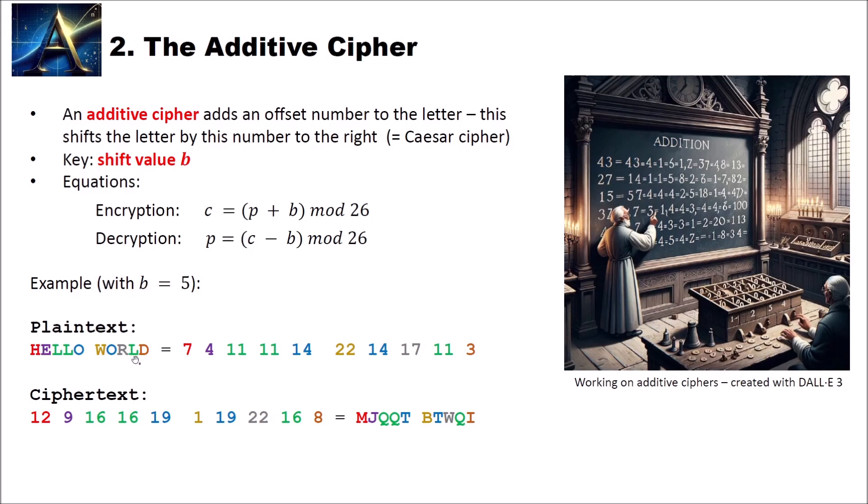Here is an example with our shift value b equal to 5. Our plaintext is Hello World. Hello World is converted to numbers here 7, 4, 11, 11 and so on. And to compute our ciphertext here we take for instance our first plaintext letter, we add 5 and we get 12. Then when we have our ciphertext numbers we convert these back to letters. We get M, J, Q, Q, T, B, T, W, Q, I. And you can see here that same letters like the L are encrypted using the same ciphertext letters. This is a monoalphabetic or a simple monoalphabetic substitution cipher.